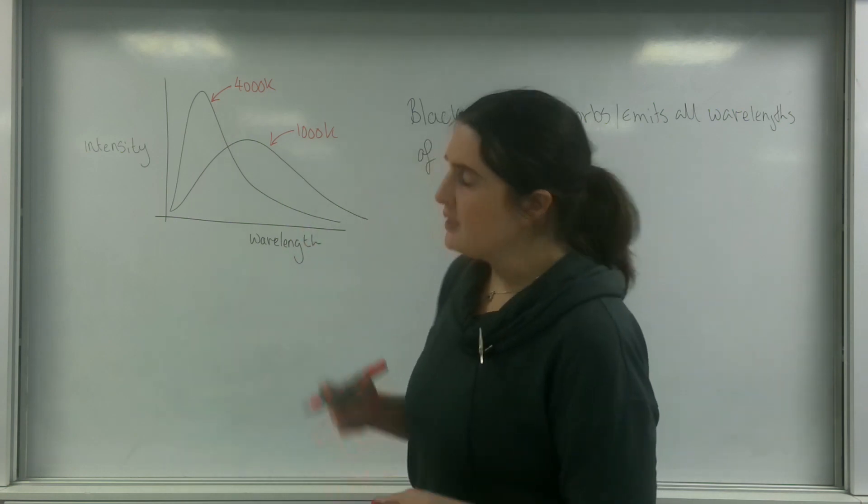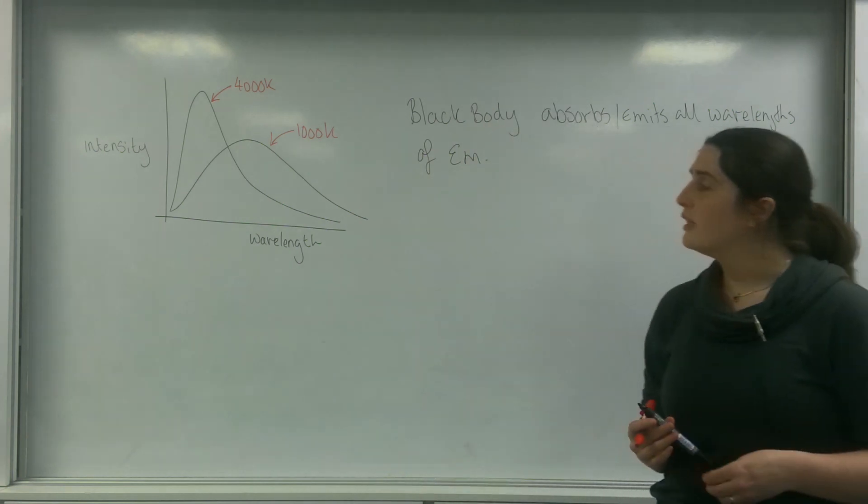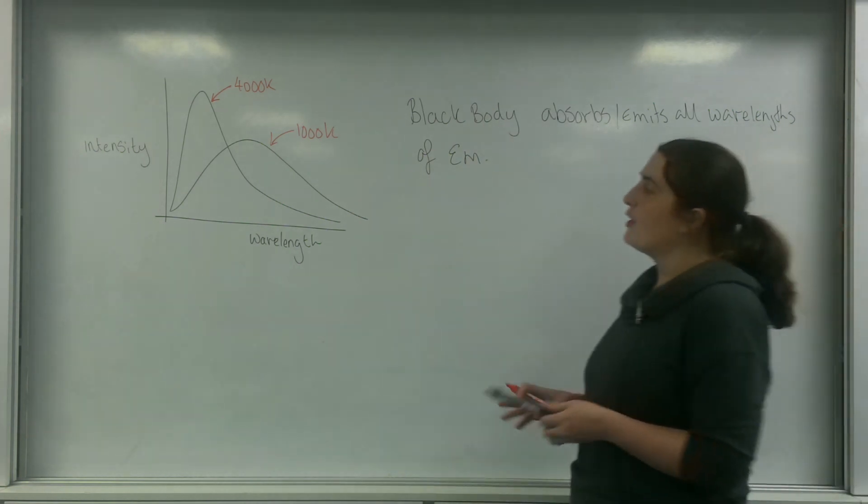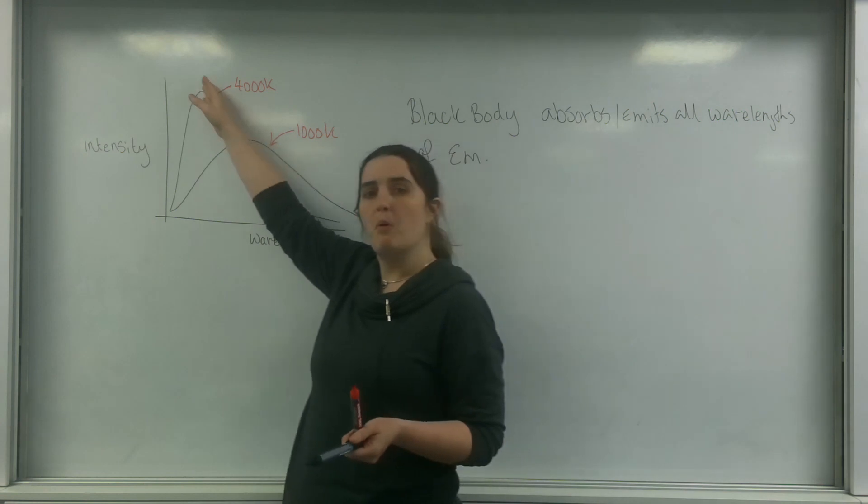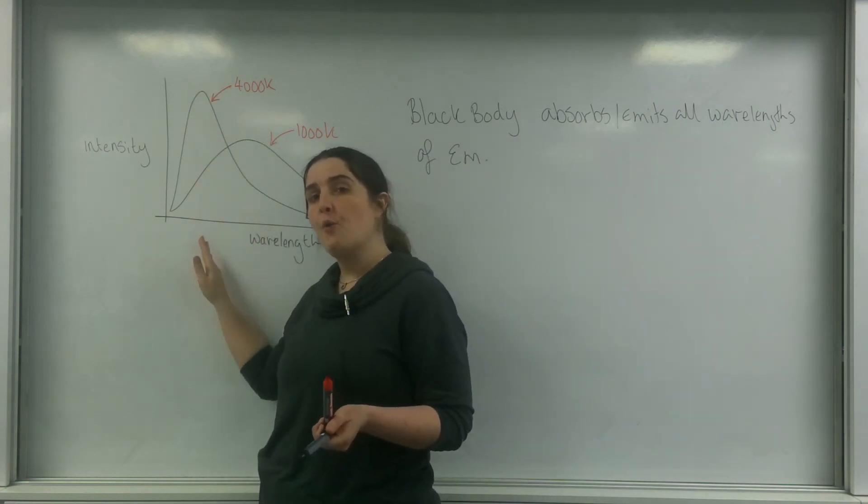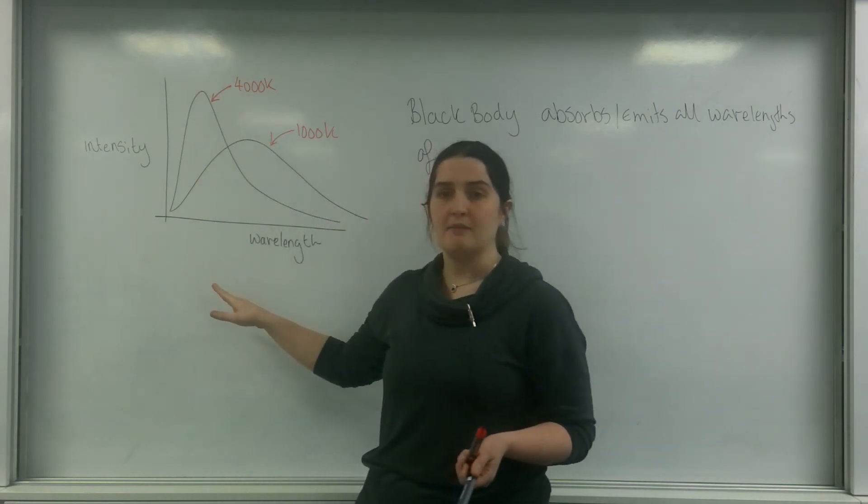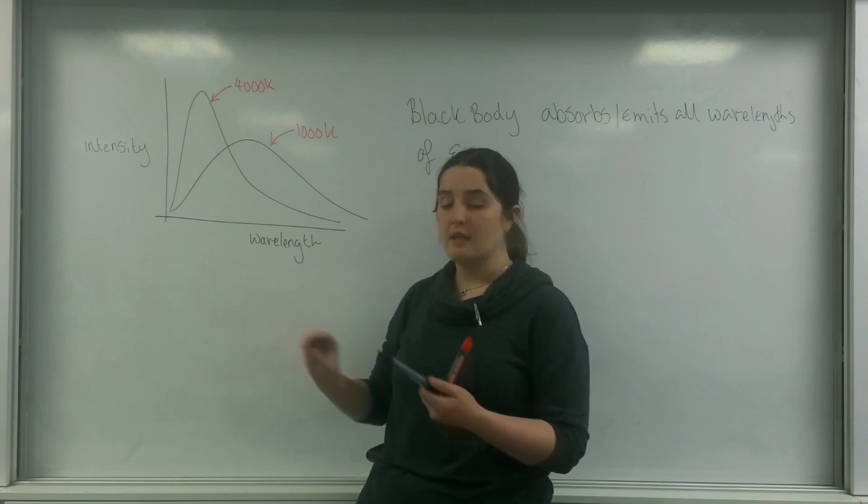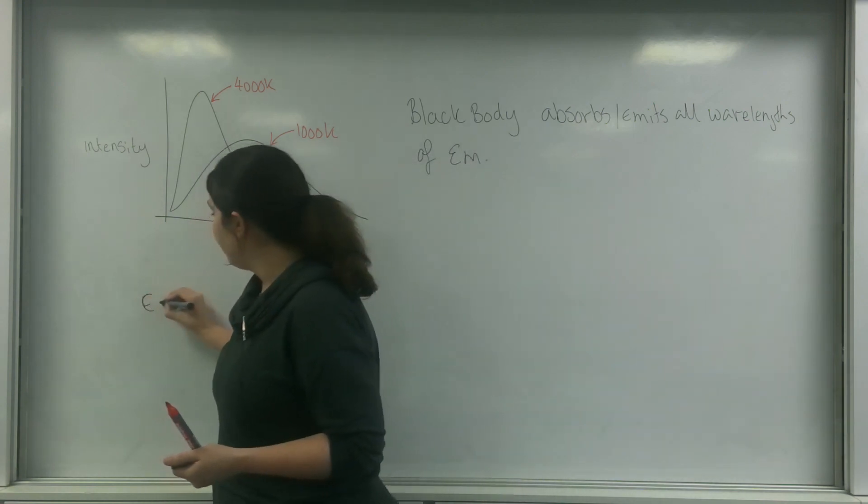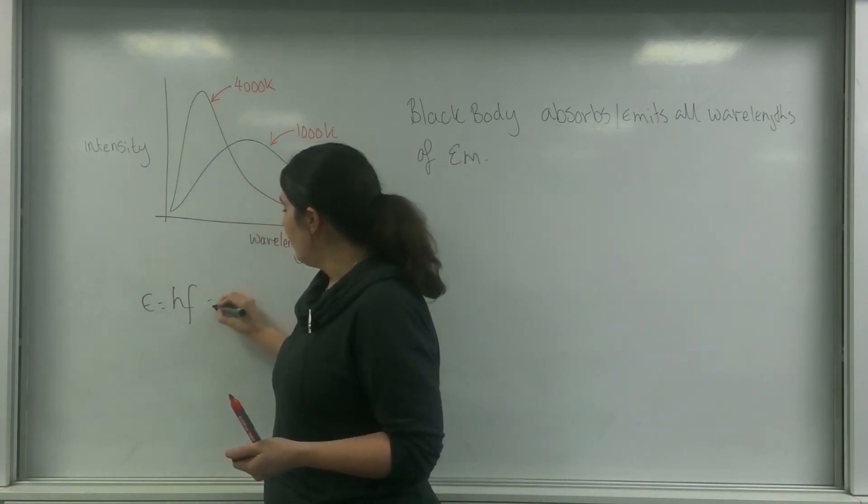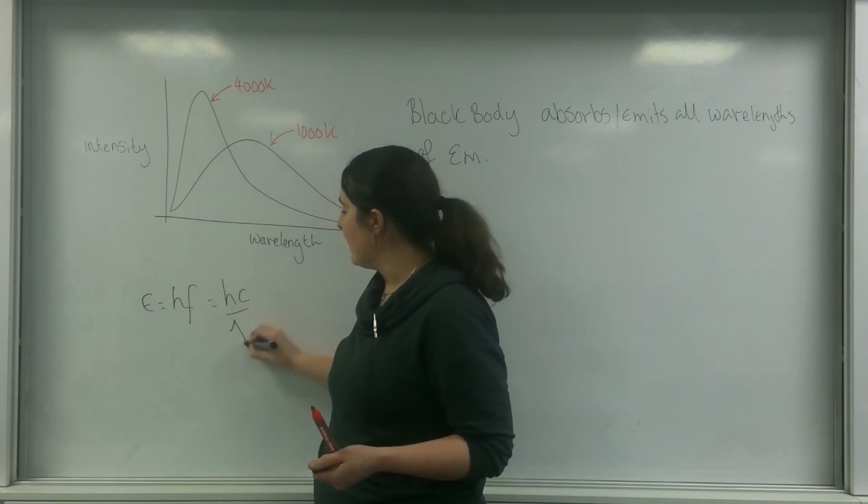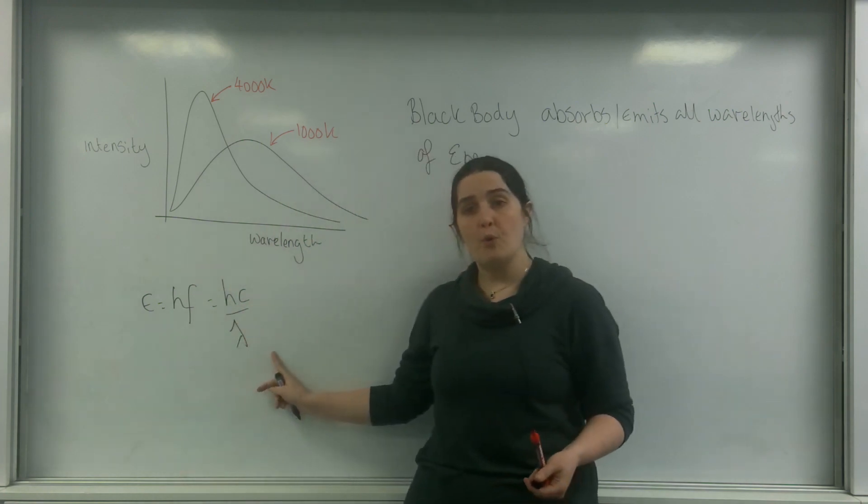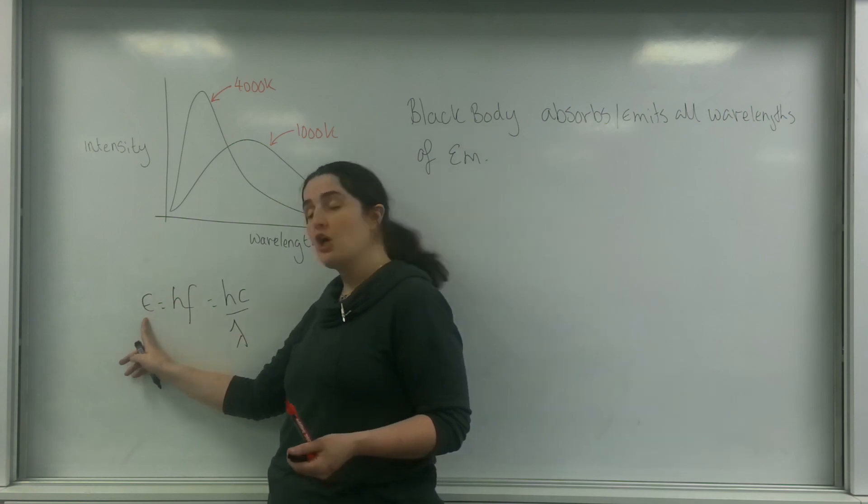And so this is called a Boltzmann distribution. As you can see, on the higher temperature, I have more of shorter wavelengths being emitted. And remember, shorter wavelengths, due to the formula E equals HF or HC over lambda, the smaller wavelengths mean they have much higher energy.